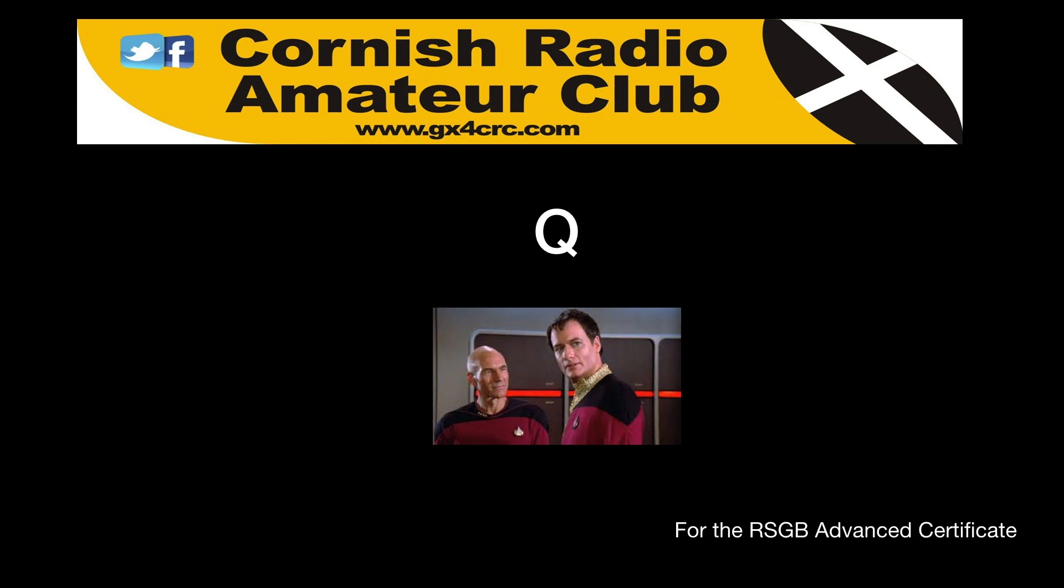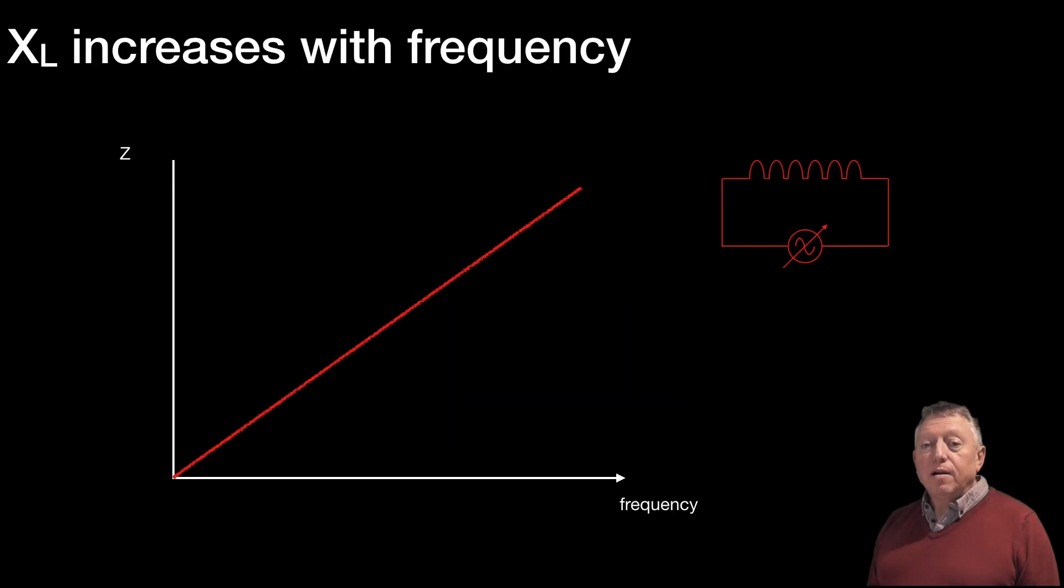So, let's remind ourselves what happens to inductive reactance with frequency. Inductive reactance increases with frequency. A pure inductor at DC will have zero reactance. It won't oppose current flow at all, so its reactance will be zero ohms.